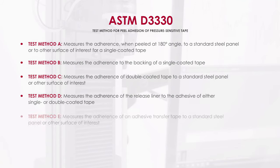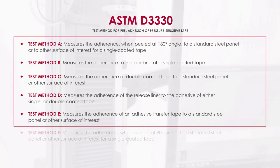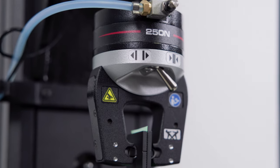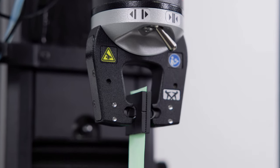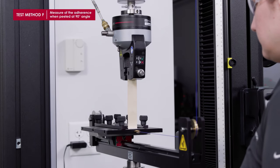This standard includes six different test methods to encompass many different specimen types. Methods A through E are 180-degree peel tests which are typically performed with low-force side-action grips. Method F requires a specialized 90-degree peel testing fixture.